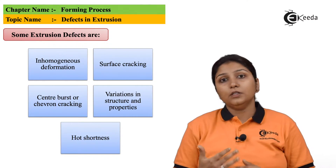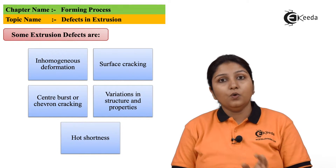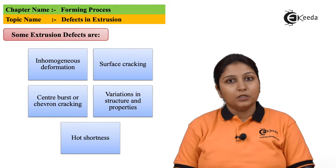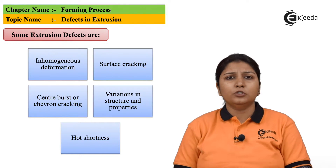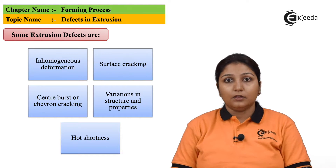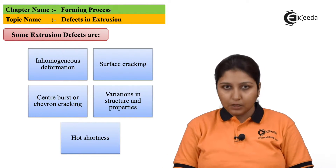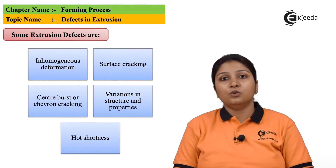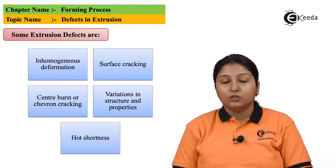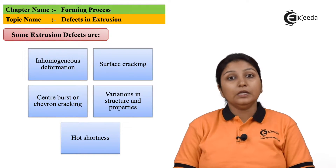During the extrusion process or in the extruded product, you have certain deformations listed below. At times there are inhomogeneous deformation, at times there are surface cracking, also there are variations in the structural and physical properties, and at times during the hot extrusion process there is hot shortness. These are some defects which are listed, and we are going to see them in detail.